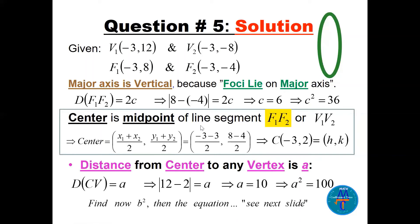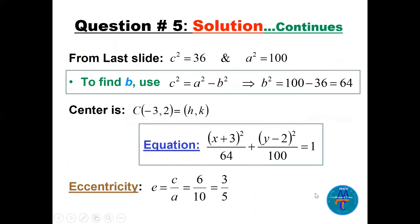The center is the midpoint of either the foci or the vertices — both give the same answer. Using the midpoint formula on the vertices: center = (−3, (12+(−8))/2) = (−3, 2), so h = −3, k = 2. To find a, take the distance from the center (−3, 2) to a vertex: |12 − 2| = 10, so a = 10 and a² = 100.